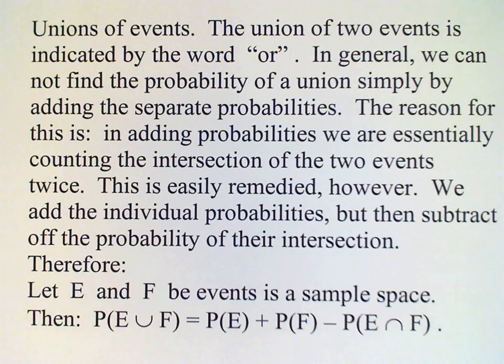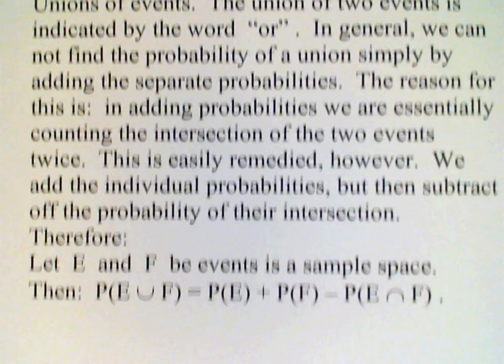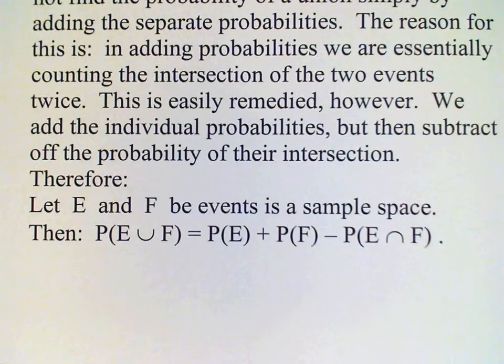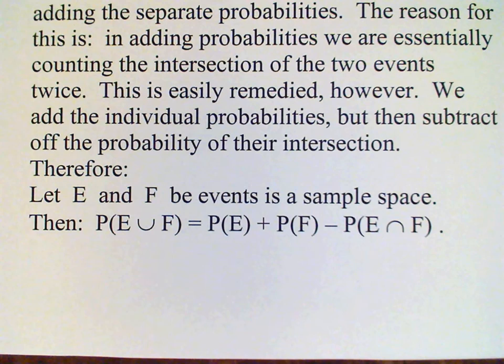However, we can account for this by subtracting off the probability of the intersection. Since we've counted it twice, subtracting the intersection probability will bring us back to the right probability.